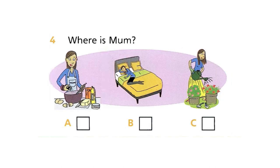4. Where's Mum? I can't find Mum. Is she in the garden? No. And she isn't in the kitchen. I know. She's sleeping in the bedroom, Dad. Oh, yes. Shh.